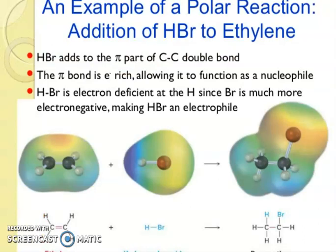So now friends, an example of polar reactions, addition of HBr to ethylene. HBr adds to the pi bond of the carbon-carbon double bond. The pi bond is electron-rich, allowing it to function as nucleophile. HBr is electron-deficient at hydrogen since bromine is much more electronegative, making HBr an electrophile. So you can see these reactions.